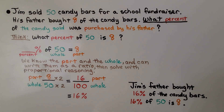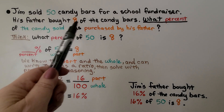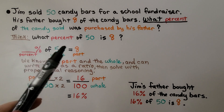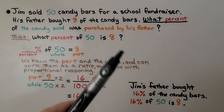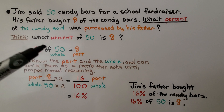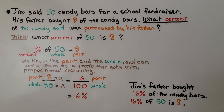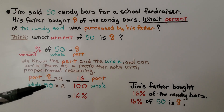Jim sold 50 candy bars for a school fundraiser. His father bought eight of the candy bars. What percent of the candy sold was purchased by his father? We know the candy he sold was 50, and his father bought eight. We need to find what the percent is — what percent of 50 is eight? His father bought eight — that's the part. He sold 50 — that's the whole.